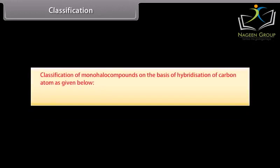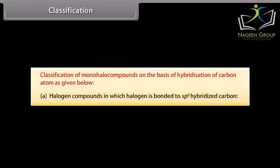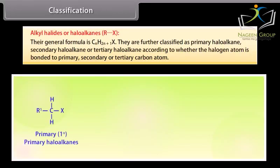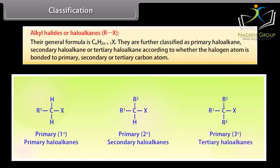Classification of mono-halo compounds on the basis of hybridization of the carbon atom: Halogen compounds in which halogen is bonded to an sp3 hybridized carbon — alkyl halides or haloalkanes (RX) — have the general formula CnH2n+1X. They are further classified as primary, secondary, or tertiary haloalkane according to whether the halogen atom is bonded to a primary, secondary, or tertiary carbon atom.